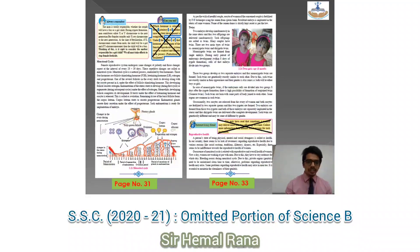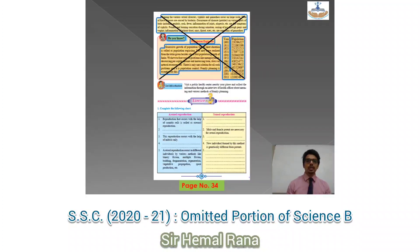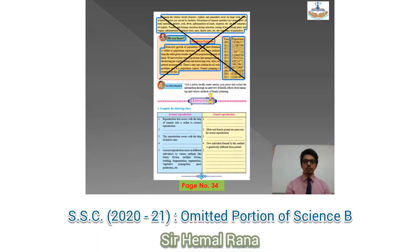On page number 31 we do not have 'Can You Tell,' and on page 33 we do not have 'Internet My Friend' — that part has been removed. Coming to page 34, the last part of this chapter does not have the entire last section except for the exercise. 'Do You Know' and all the smart stuff has been removed.